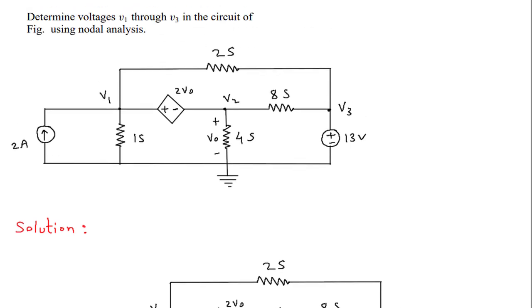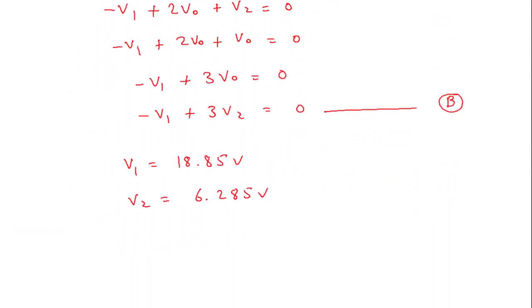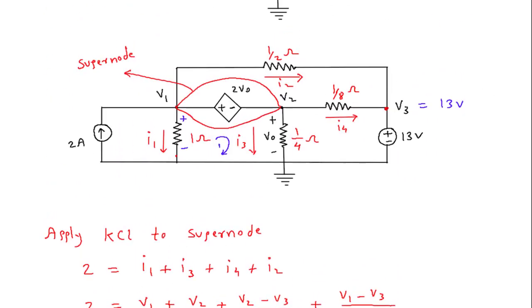What we have to find? We have to find V1, V2 and V3. So V1 is equal to 18.85, V2 is equal to 6.285, and V3 is equal to V3 is directly 13 volts.